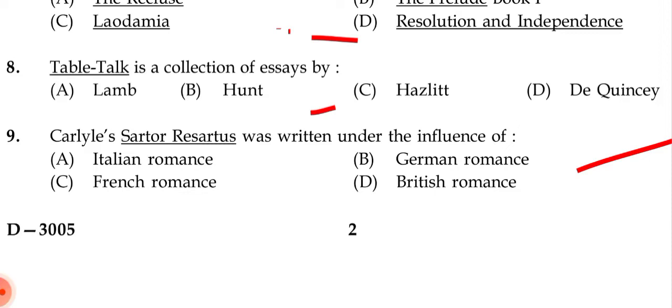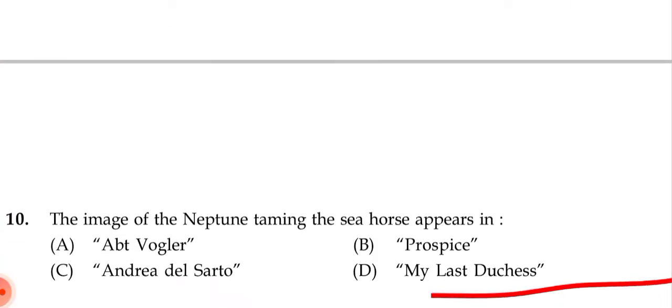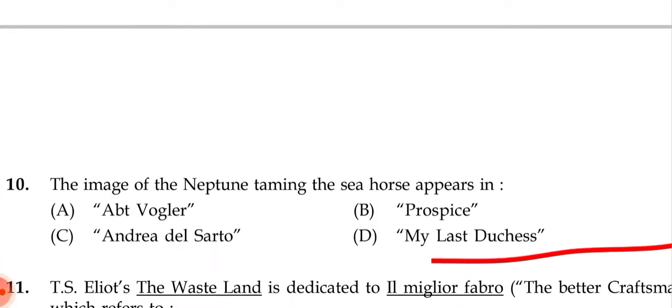Next question: Carlyle's 'Sartor Resartus' was written under the influence of — (a) Italian romance, (b) German romance, (c) French romance, (d) British romance. The correct answer is (b) German romance.